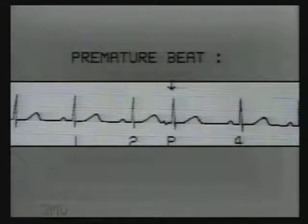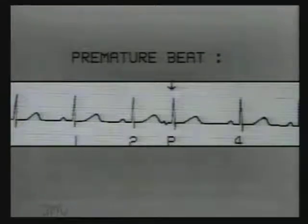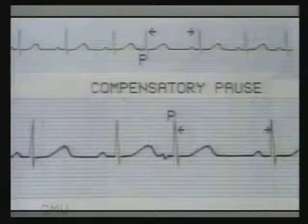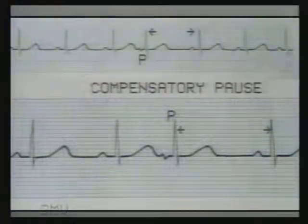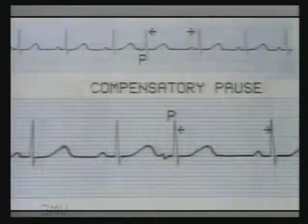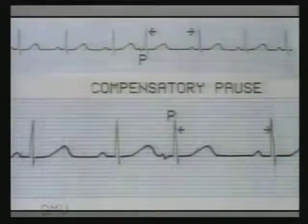In this tracing, a premature beat has occurred after beat number 2. As a result, the expected sinus beat number 3 is missed and after a small pause, the next sinus beat number 4 comes and sinus rhythm starts again. The pause between the premature beat and the next sinus beat is termed as the compensatory pause, and it compensates for the early occurrence of the premature beat. If it compensates exactly for the missed beat and the third sinus beat occurs exactly where it would otherwise have occurred, then it is termed as a complete compensatory pause.